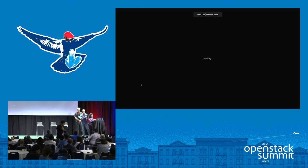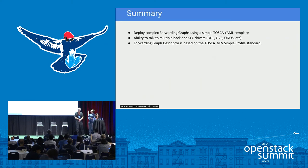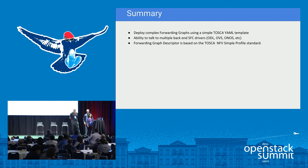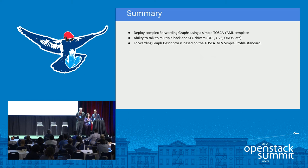To summarize: deploying complex forwarding graphs using a simple, easy-to-read TOSCA template with Tacker as the NFV orchestrator takes just a few commands. When a user initiates an SFC request, they need not worry about the backend driver — Networking SFC handles multiple backend drivers like ODL, OVS, and others. The forwarding graph descriptor is based on the TOSCA NFV profile open standard, which will help evolve this further in future iterations.